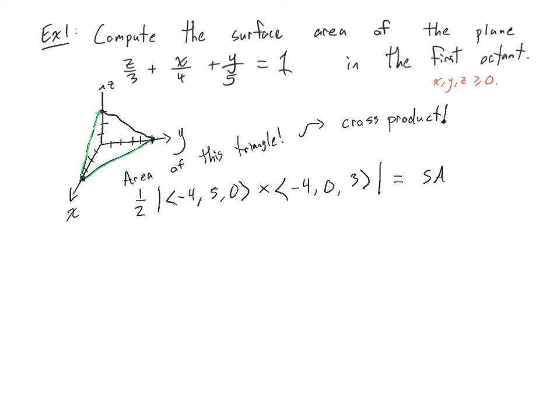Oh, and I forgot, I should divide it by 2 because surface area, cross product gives you the area of the parallelogram. And I only want half of that because I want the area of the triangle.